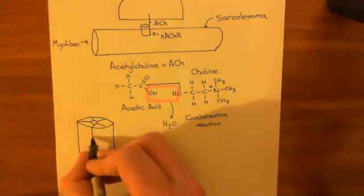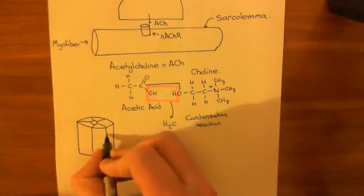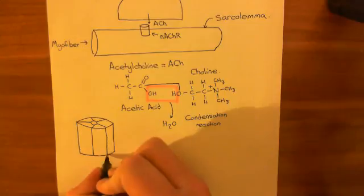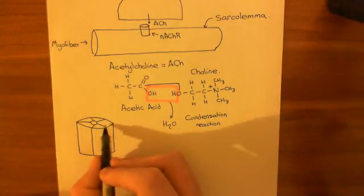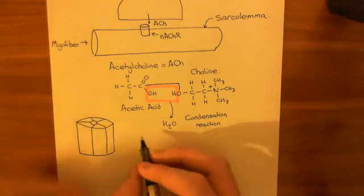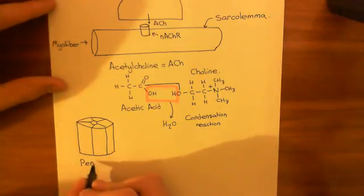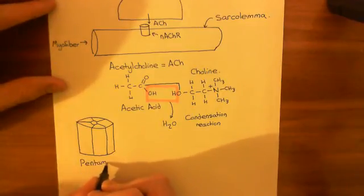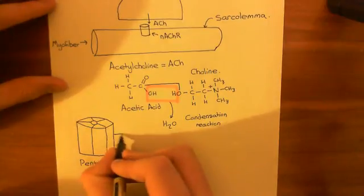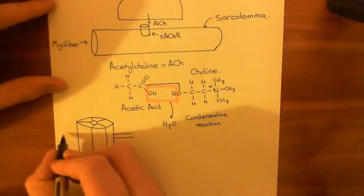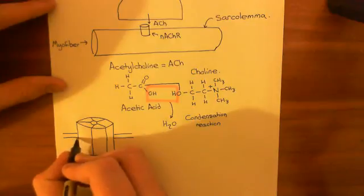You have five separate proteins making up this nicotinic acetylcholine receptor, like so. So, one, two, three, four, five. So, it is a pentamer, basically. So, it's not just one protein. Instead, it's made up of five separate proteins, which are all bound together in this pentamer here.